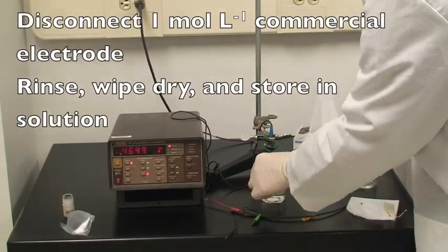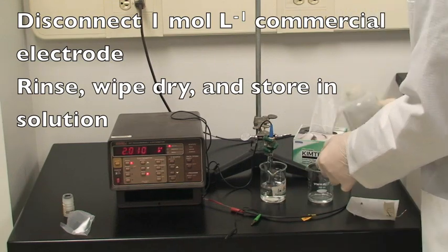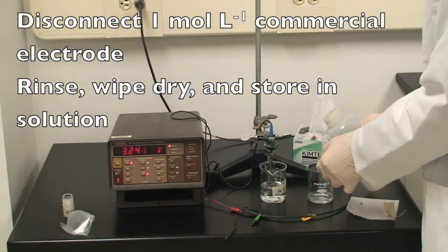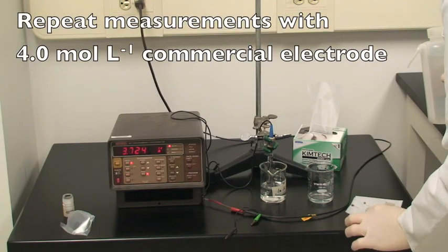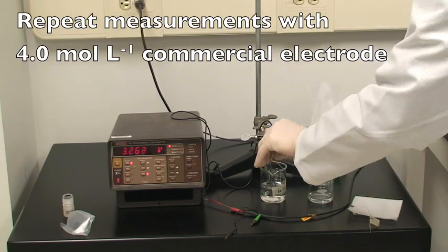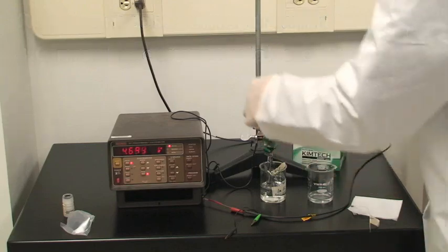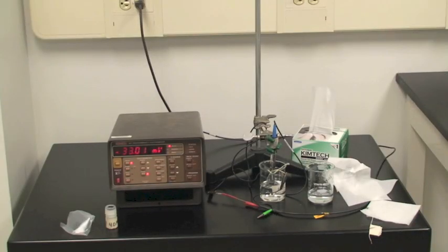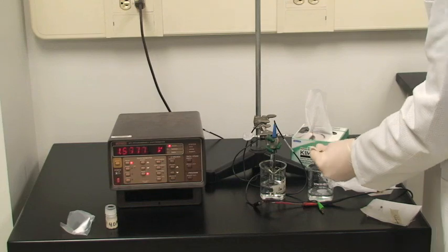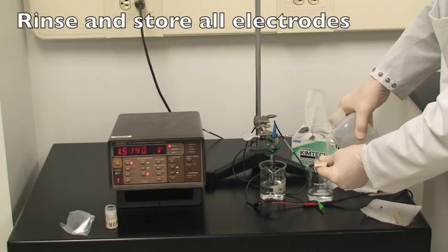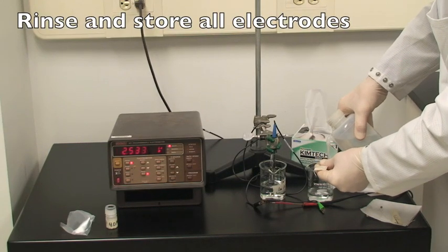Disconnect the electrometer, remove the one molar reference electrode from the solution, rinse, wipe dry, and return to its storage container. And then repeat all measurements made using the four molar electrode. When you've recorded the potential of electrode A and B in one molar potassium chloride versus one and four molar reference electrodes, you are now complete with the experimental phase. You may rinse and store the four molar electrode.